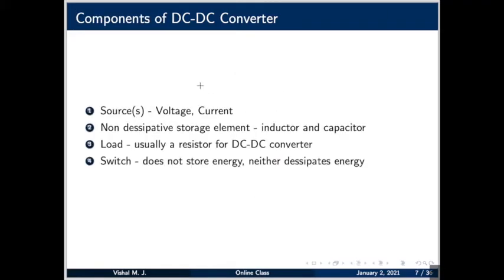What are the components of a DC-DC converter? The main component is a switch — it does not store energy, neither does it dissipate energy. This statement is not absolutely true; real switches do dissipate energy, but the energy dissipated is significantly less compared to the energy it handles. So for simplicity, we assume it is an ideal switch.